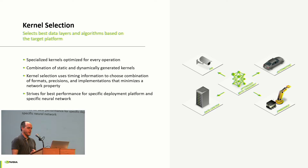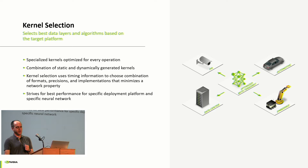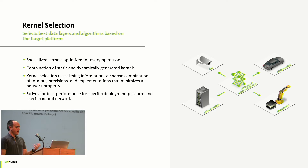Finally, kernel selection is how you pick the implementation for everything you've figured out. You don't want to pick just the fastest implementation for any single operation — you want to find the fastest implementation across your entire network. Sometimes you'll dynamically generate that kernel, sometimes you'll use a handwritten one, but the goal is the fastest implementation for the entire network.